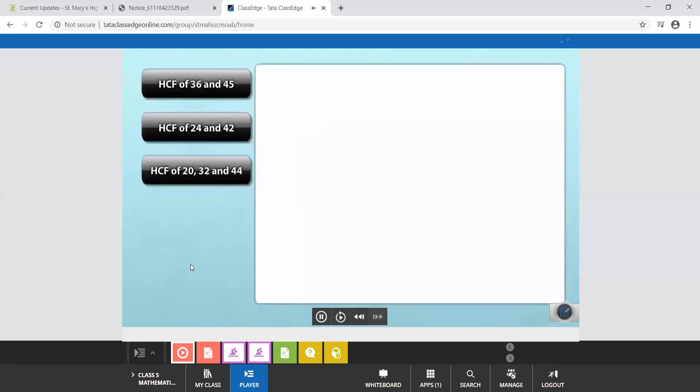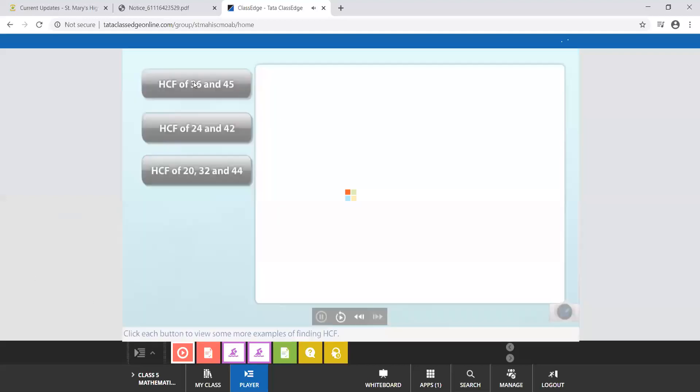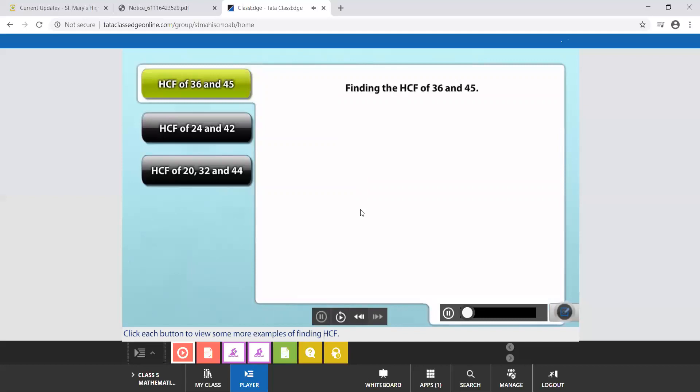Click each button to view some more examples of finding HCF. Let's find the HCF of 36 and 45. First, let's find the prime factorization of both 36 and 45.